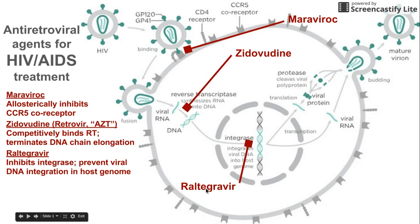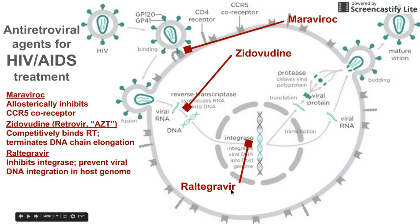Another antiretroviral drug that we use is called Raltegravir, which inhibits the integrase enzyme. This one's a little easy to remember because we have the word 'tegra' in Raltegravir and the word 'tegra' in integrase. So Raltegravir inhibits integrase — it's an integrase inhibitor. It prevents the newly synthesized viral DNA from being integrated into the host genome.